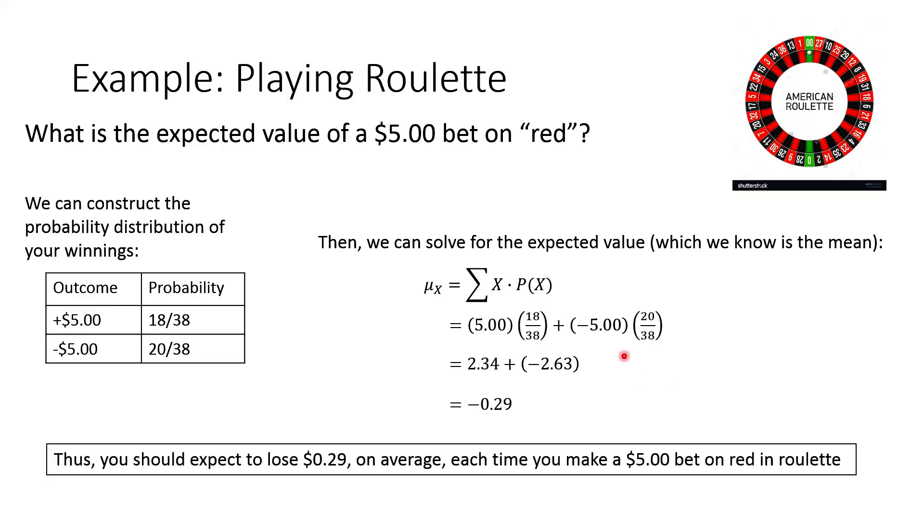And what does that actually mean? What that actually means is that you should expect to lose $0.29 on average each time you make a $5 bet on red in roulette. And now, obviously, we can't actually ever win or lose $0.29. You're either going to win $5 or you're going to lose $5. What the $0.29 talks about is that if you play this game over and over and over and over again, you're going to have a lot of $5 wins and even more $5 losses. And over time, if you average those out, eventually, you're going to end up with a $0.29 average loss.